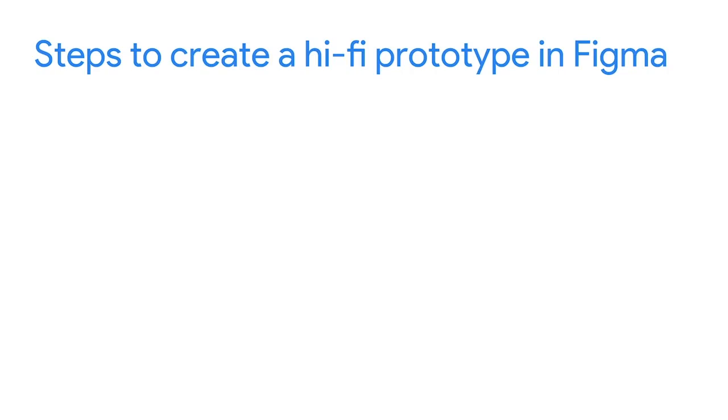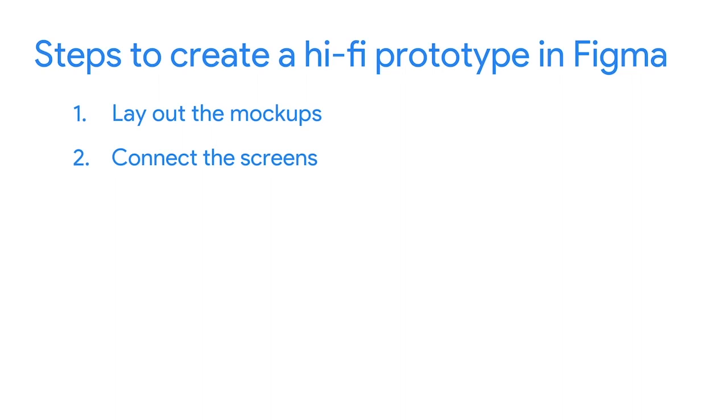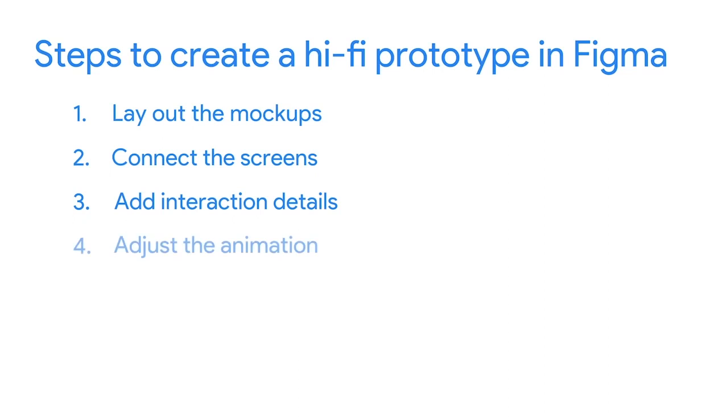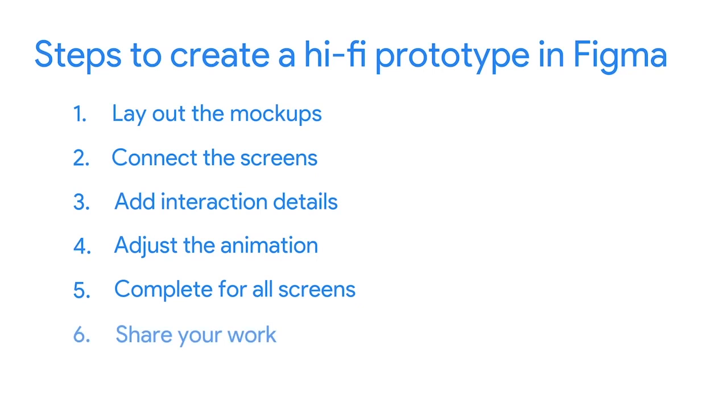There are six steps to create a high-fidelity prototype in Figma. Those six steps are: lay out the mockups, connect the screens, add interaction details, adjust the animation, complete for all screens, and share your work. In this video, we'll focus on the first two. We'll cover the other four later.